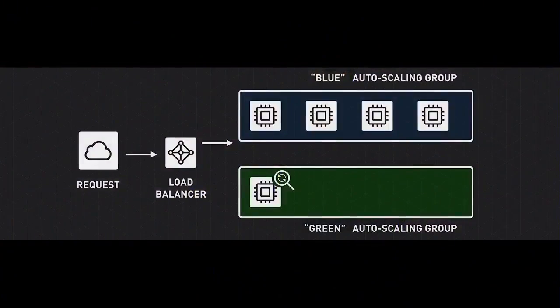When a new platform becomes available, Elastic Beanstalk will spin up a blue-green deployment. It will keep the traffic pointed from the load balancer to the blue auto-scaling group, and it will deploy the new version of the platform and the application into the green auto-scaling group. It will then run tests against that application to make sure that everything is checked out before any traffic gets routed to it.